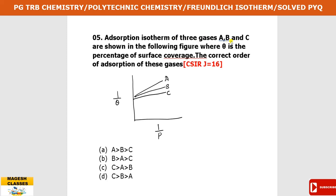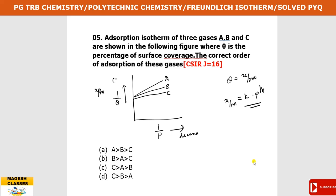The adsorption isotherm of three gases a, b, and c are shown in a figure, where theta is the percentage of surface coverage. The question asks for the correct order of adsorption of these gases. Theta equals x by m (surface coverage), and x by m equals k into p power 1 by n. The gas with the highest surface coverage has the most adsorption. From the graph, c has the highest adsorption, then b, then a. So the order is c, b, a. Your answer is d.